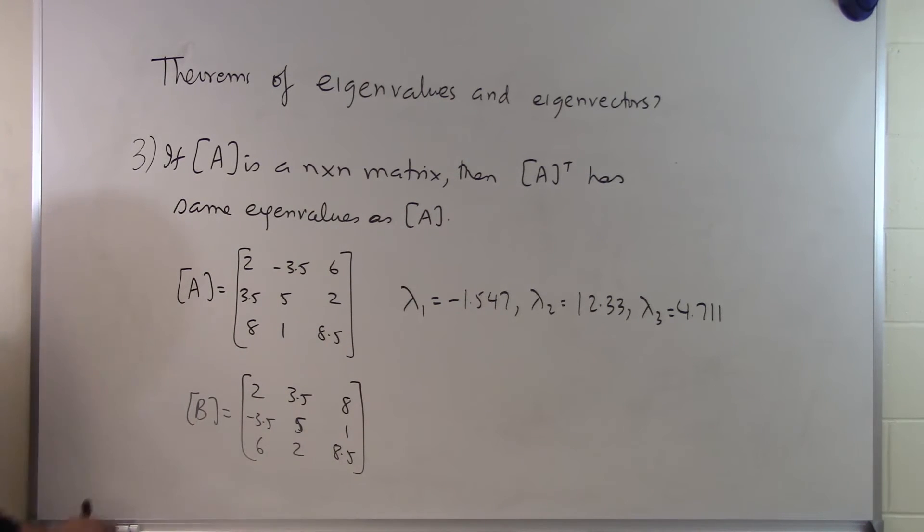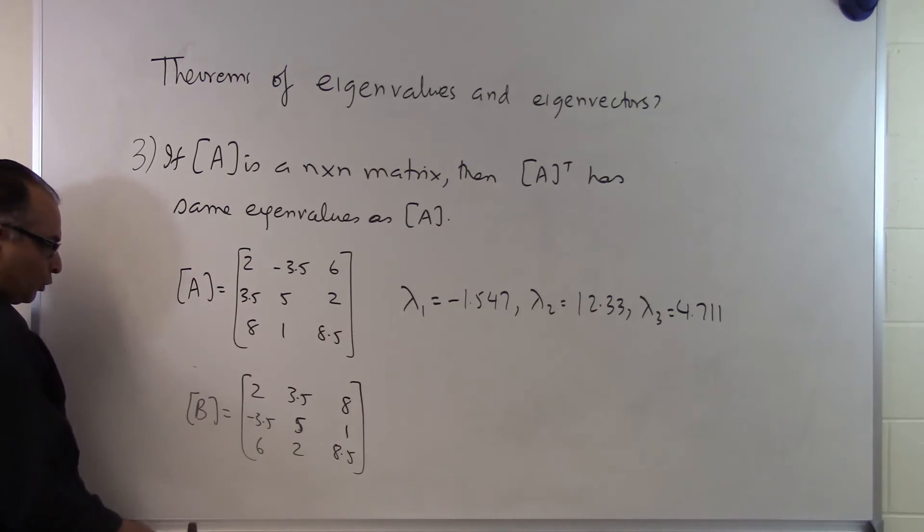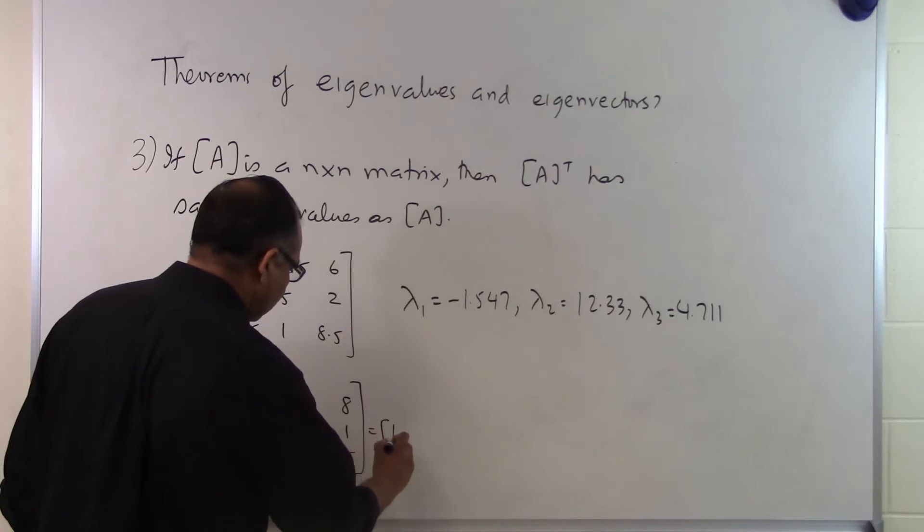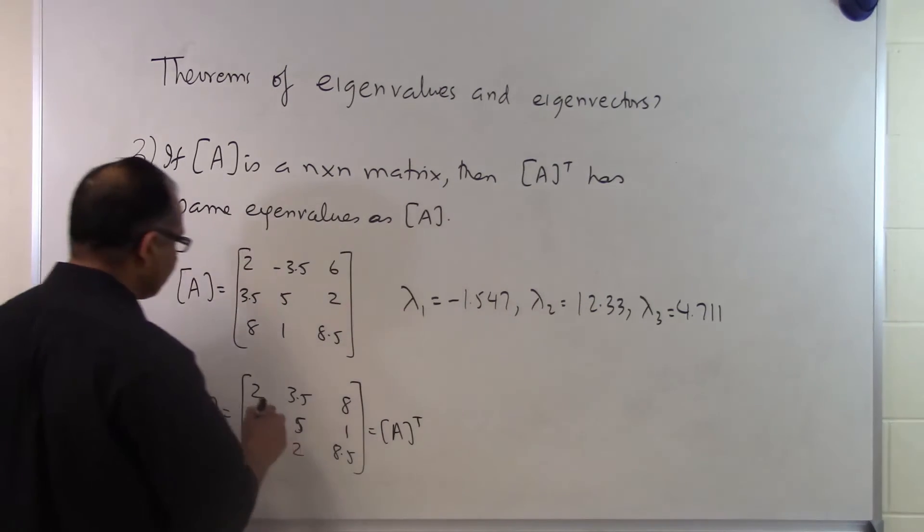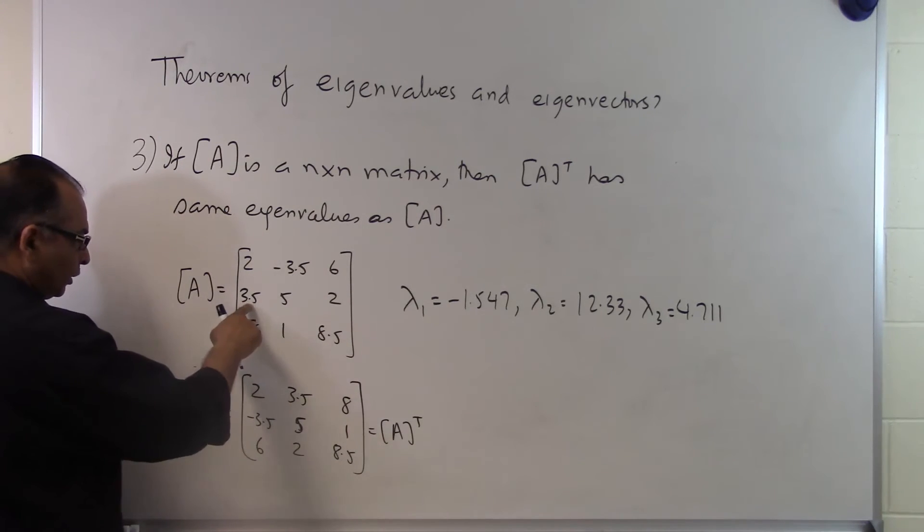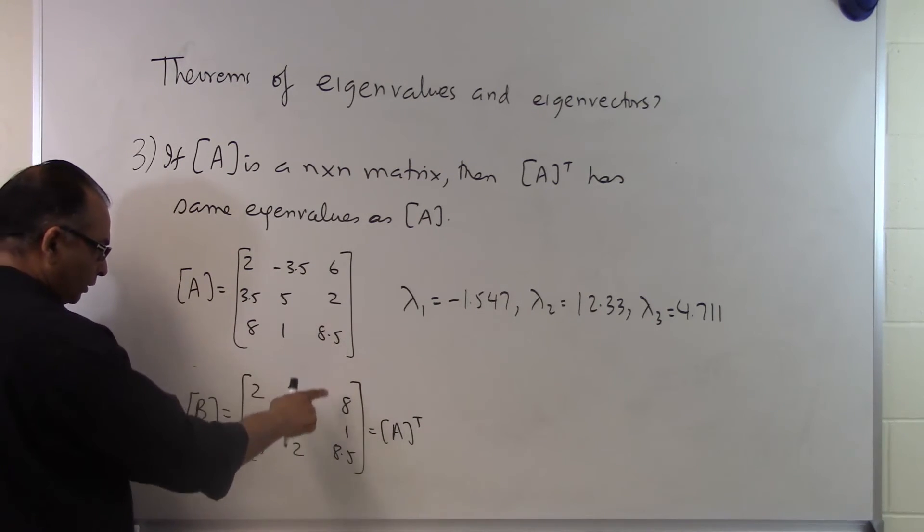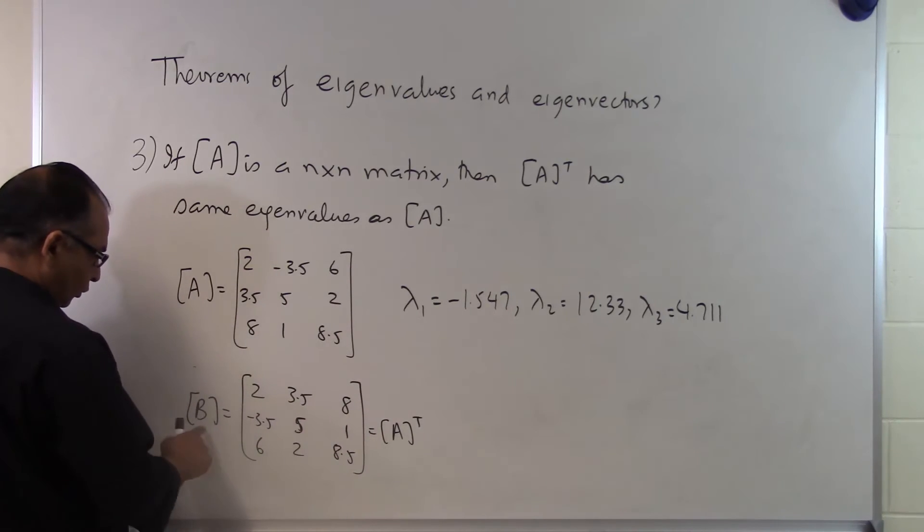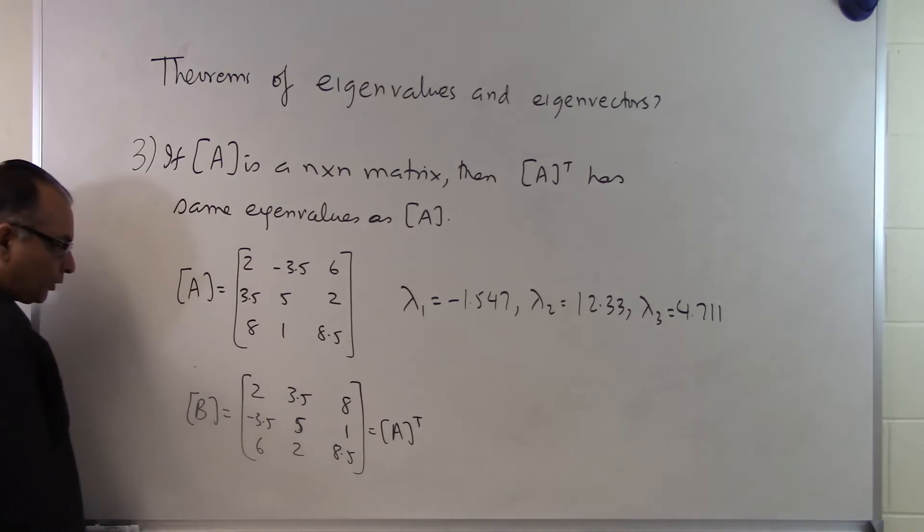If I realize that this matrix B is simply the transpose of the A matrix, which you can see that 2, minus 3.5, 6 is right here, 3.5, 5, 2 is right here, 8, 1, 8.5 is right here. So the B matrix here is same as the A transpose.